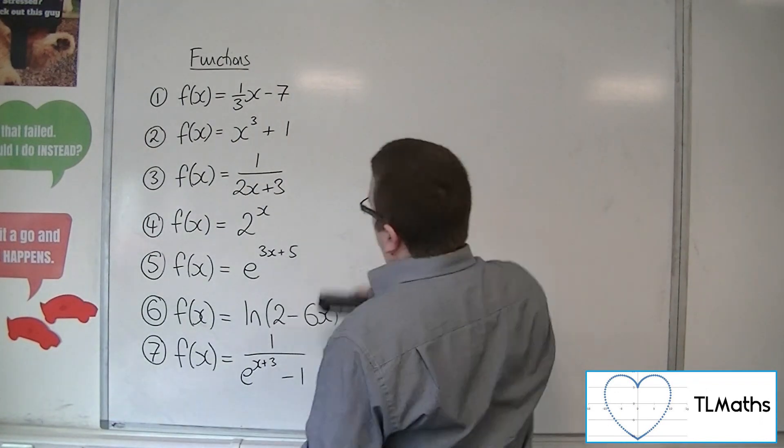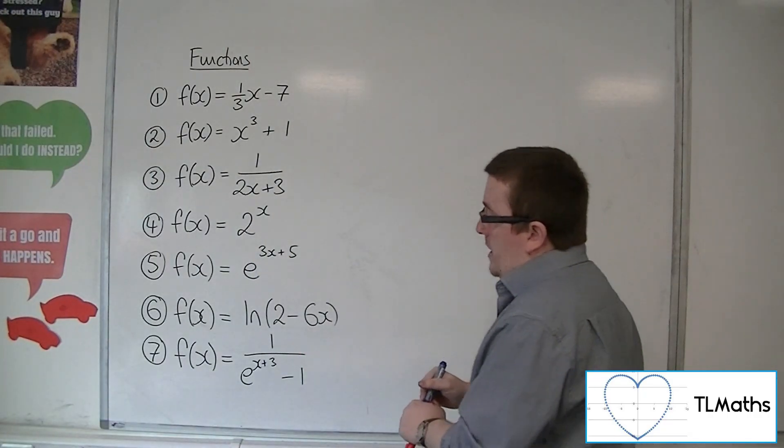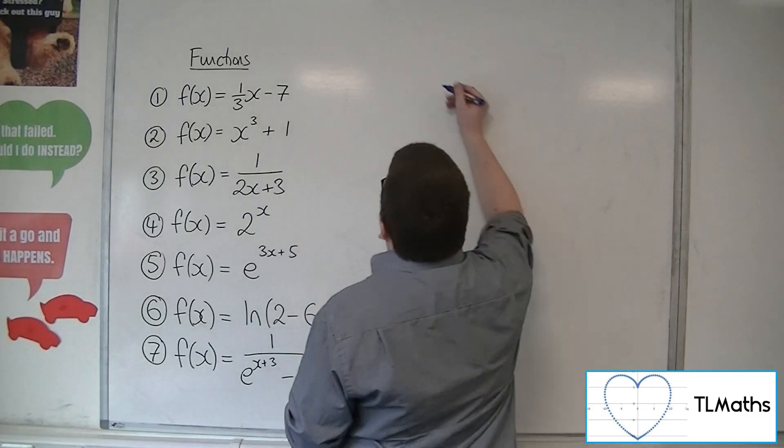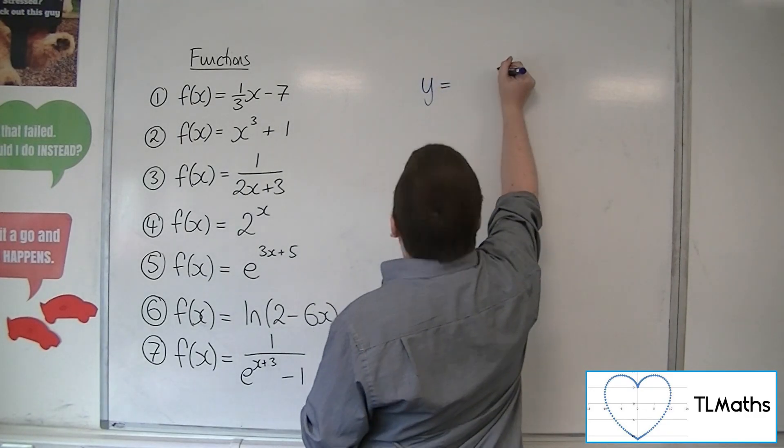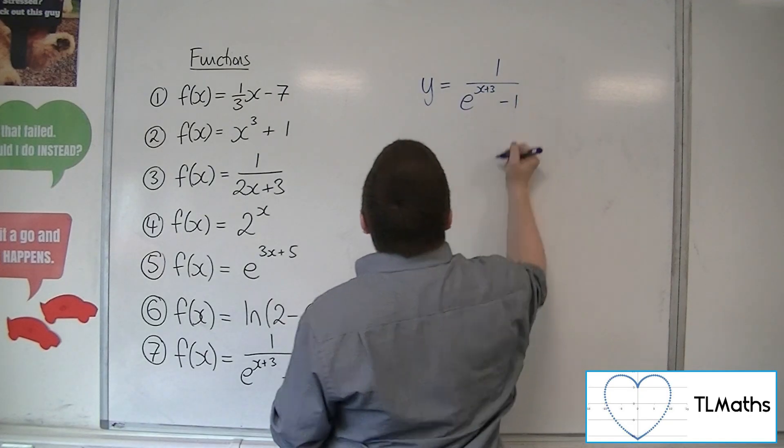So finally, number 7, we've got f(x) = 1/(e^(x+3)) - 1. So first of all, y = 1/(e^(x+3)) - 1.